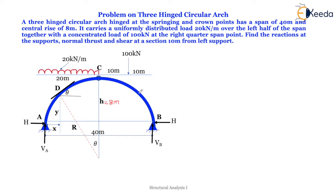It carries a uniformly distributed load of 20 kilonewtons per meter over the left half of the span, together with a concentrated load of 100 kilonewtons at the right quarter span point.